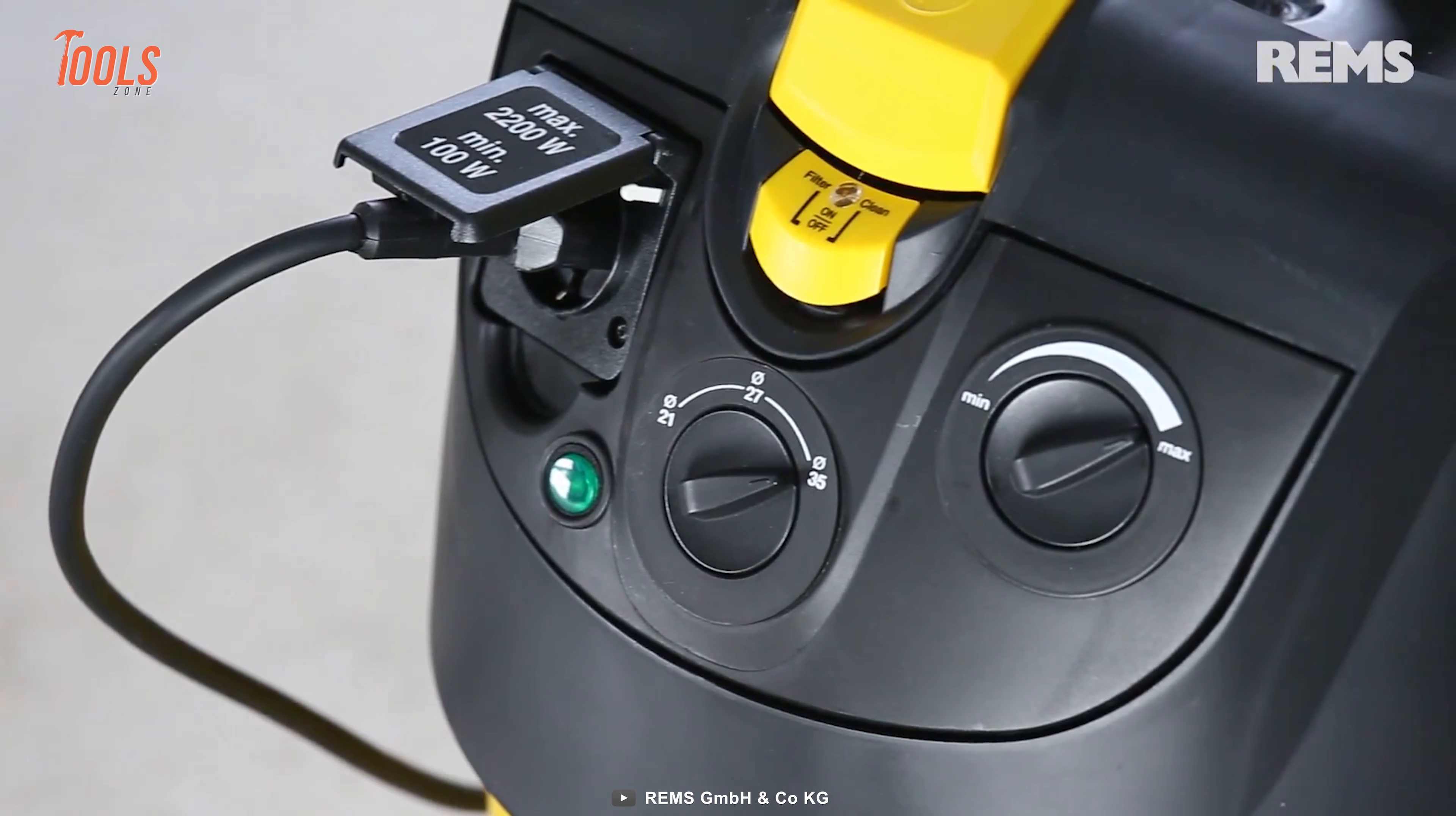Annoyed with lugging around a bunch of heavy, bulky tools just to make a few cuts? Meet the Evolution R15-0-RCP, an ultimate multi-material cutting tool that will change the way you work forever. This tool can cut through just about anything: metal, plastic, wood, or masonry. You name it, it'll slice through it like a hot knife through butter.